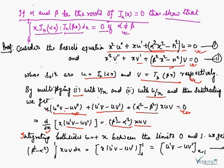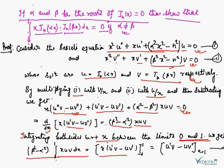Now integrating both sides with respect to x between the limits 0 and 1 — we are integrating because our limits are from 0 to 1 — after integrating and applying the limits 0 to 1, we have: (β² − α²) · ∫₀¹ x·u·v dx = [x(u'v − uv')]₀¹.